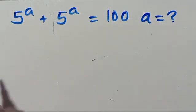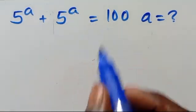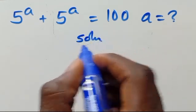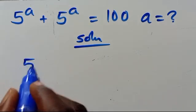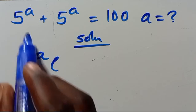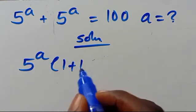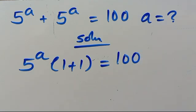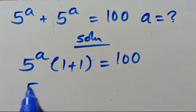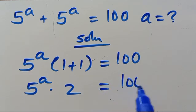What is the value of A, given that you have 5 to the power of A plus 5 to the power of A equals 100? So from here we have 5 to the power of A divided by this will be 1, plus 5 to the power of A divided by this will also be 1, equals 100. So from here 1 plus 1 will be 2 times 5 to the power of A times 2 equals 100.